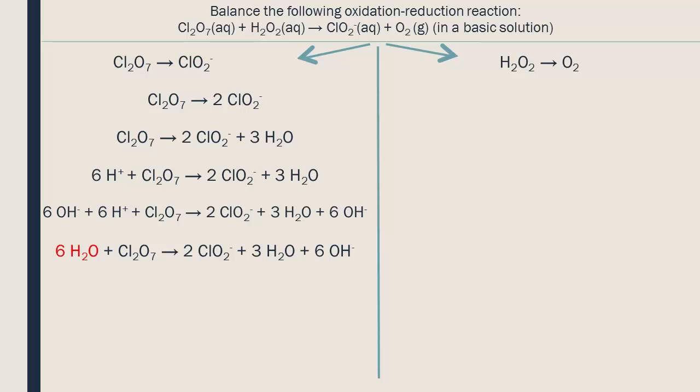The other atoms of chlorine, oxygen, and hydrogen are still balanced. We simplify the number of water molecules in the equation. We have six on the left and three on the right, so we subtract three from each side so that we are left with only three on the left.